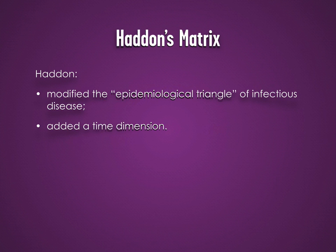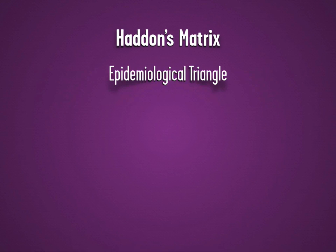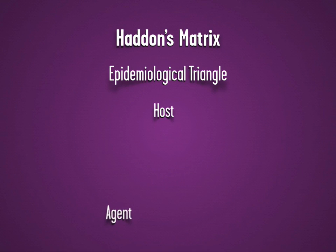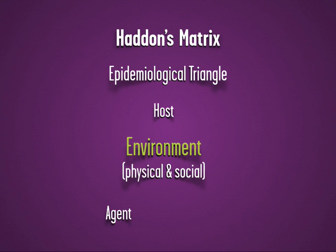Using a modified version of the classic epidemiological triangle of infectious disease, Haddon suggested that injuries be considered from a time series perspective. The epidemiological triangle encompasses host, or the infected person; agent, or the disease-causing organism; and environment, both physical and social.